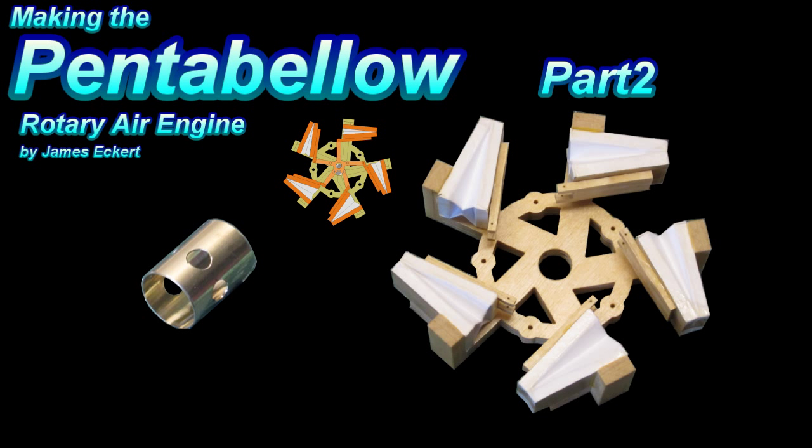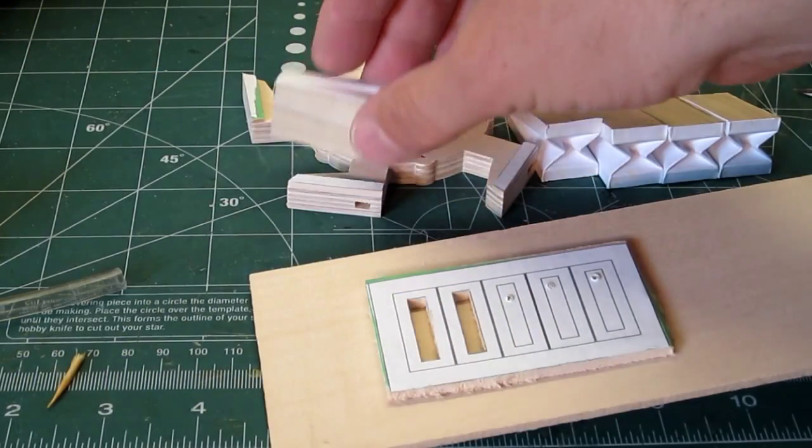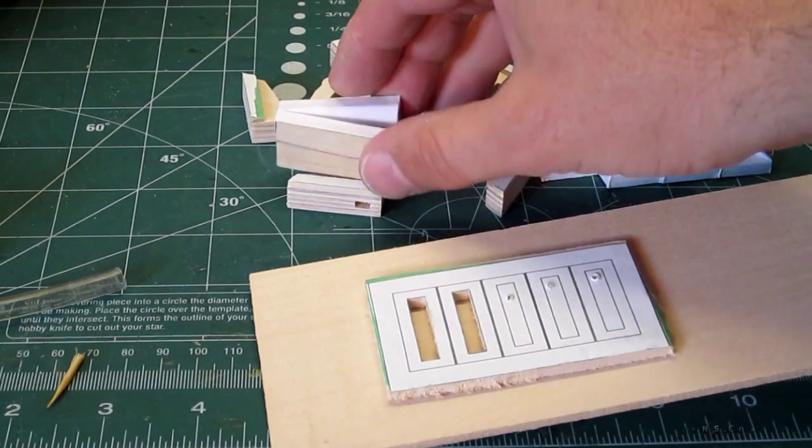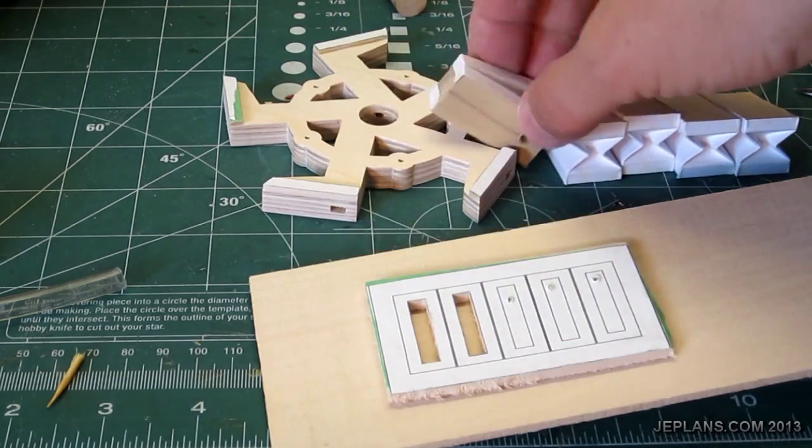Making the pentabello rotary air engine part 2. I'm now working on the air channel. I'm just going to take the air from here and feed it to the bellow.